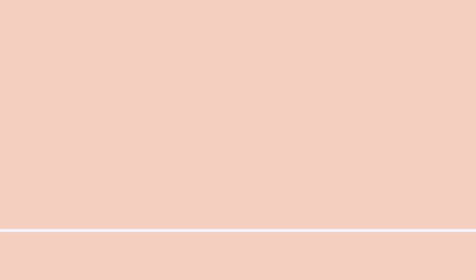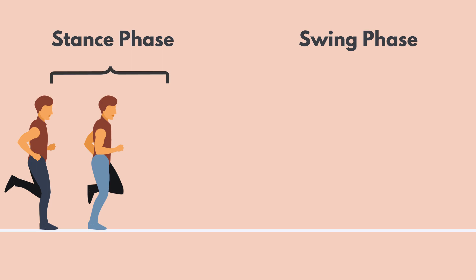During the stance phase, one foot strikes the ground, the body's weight is transferred onto the landing leg, and the shock is absorbed; then the toes will propel the foot away from the ground. During the swing phase, both feet are elevated above the ground and the contralateral foot gets ready to strike the ground next.